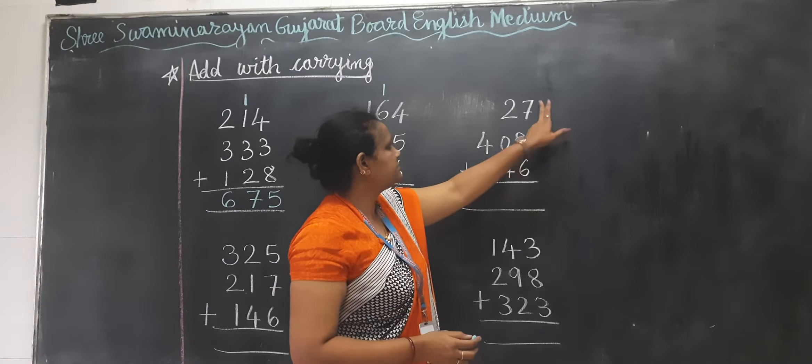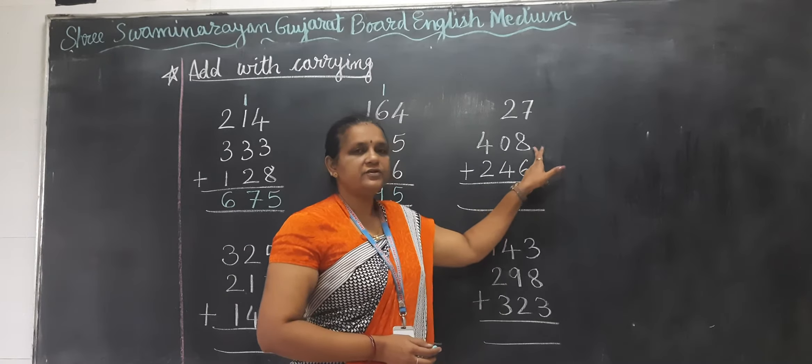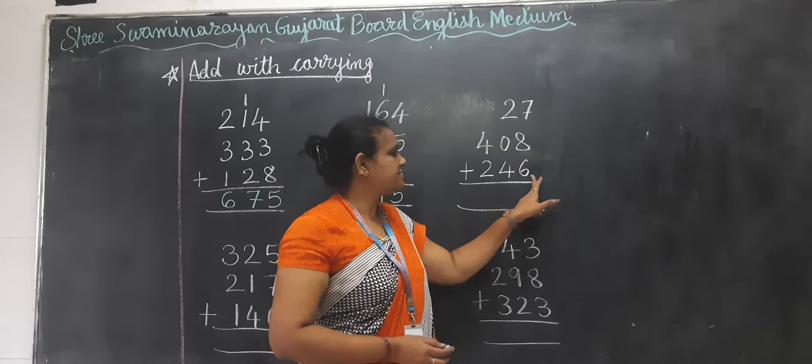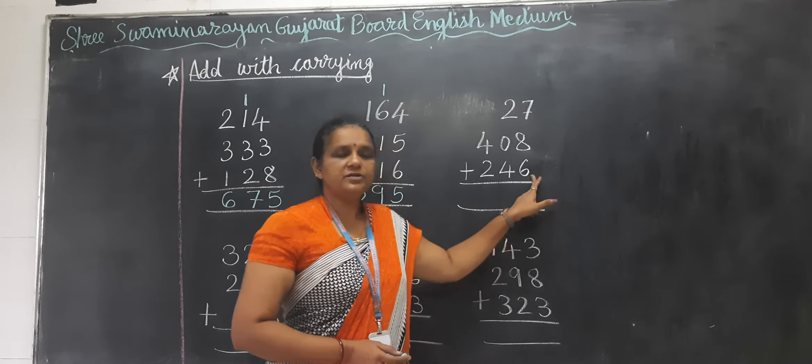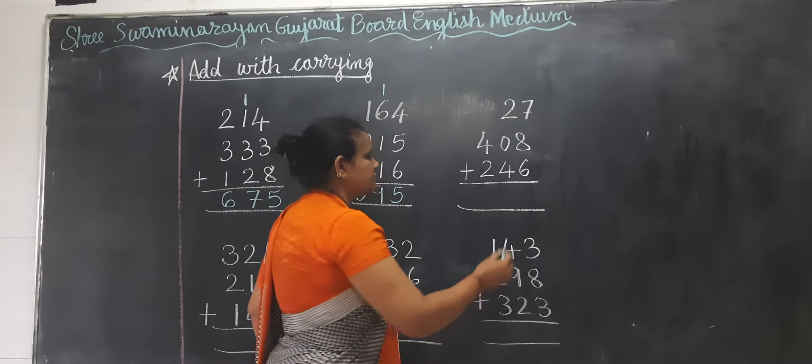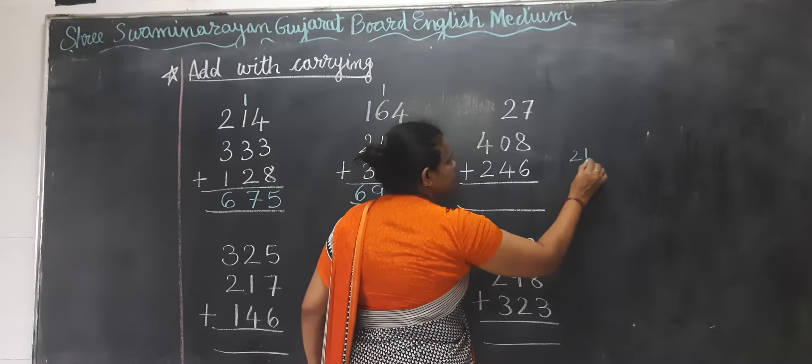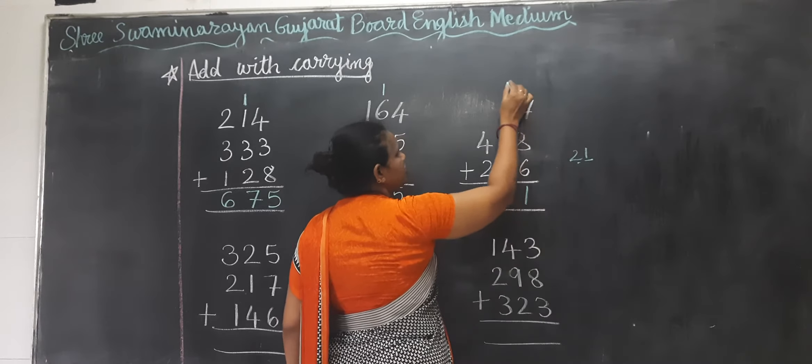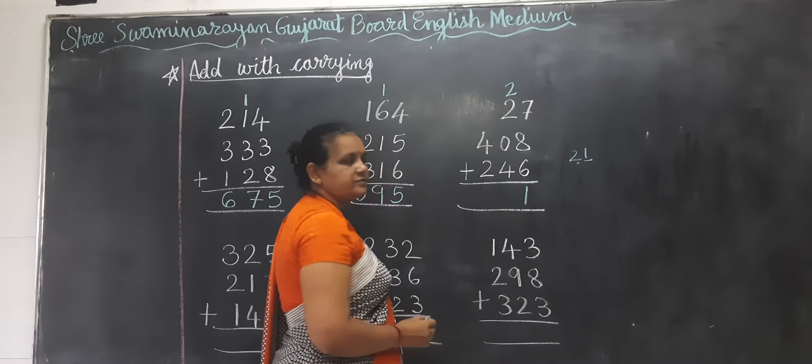Now here 7 plus 8 equals 15. 15 plus 6 equals 21. So 2 digits. So 1 is here and 2 you have to carry forward.